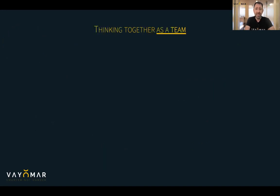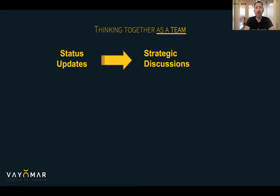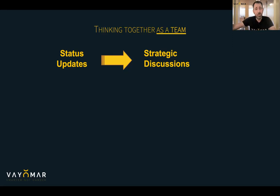The second weakness is that a lot of times these management teams don't know how to think well as a team. That is best represented by the fact that their management meetings are usually just status updates and decisions. We have an entire methodology called 'Management Meetings: From Status Updates to Strategic Discussions.' Usually all I have to do is present that title and people say, 'Oh my God, that's exactly the problem we have.'